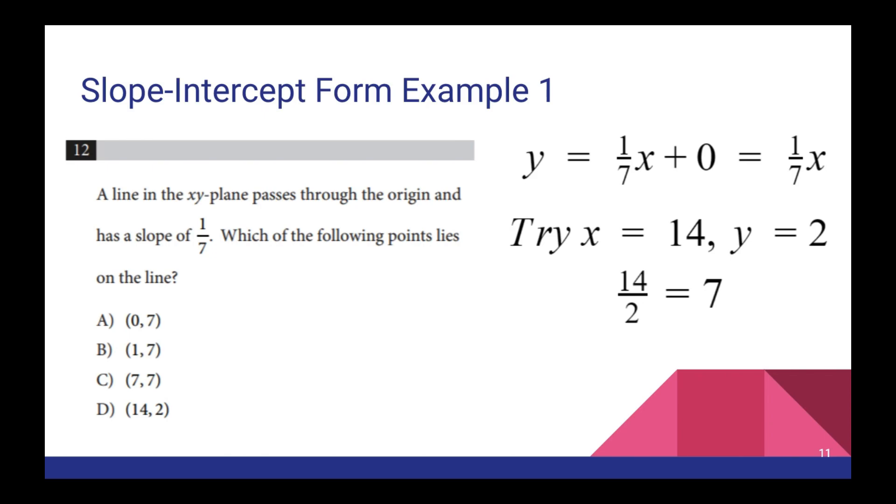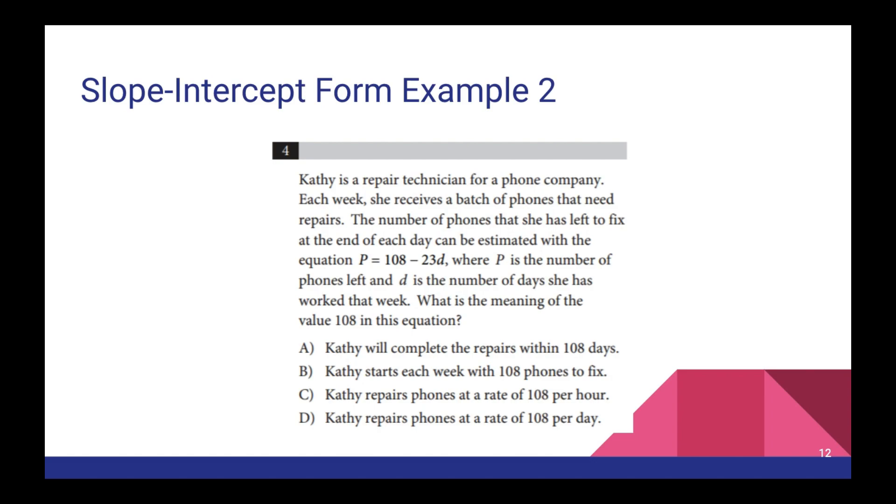Here's a more in-depth question. So sometimes you're going to get these more qualitative questions that play on slope intercept form. So here we're asked, we're given an equation for the number of phones left, and we're asked what's the meaning of the value 108? Well, first thing here, we just see there's a single D. This is a linear equation. Let's put it into slope intercept form. That's what slope intercept form is. Here's what the equation looks like when we just switch around the minus 23D term and the 108 term to put it into slope intercept form. And then because we know what slope intercept form is, and we see that B is 108, that's the Y intercept. It's very easy to tell that Kathy starts each week with 108 phones to fix. The answer is B.